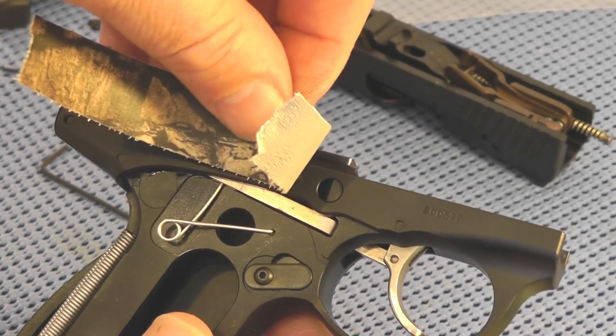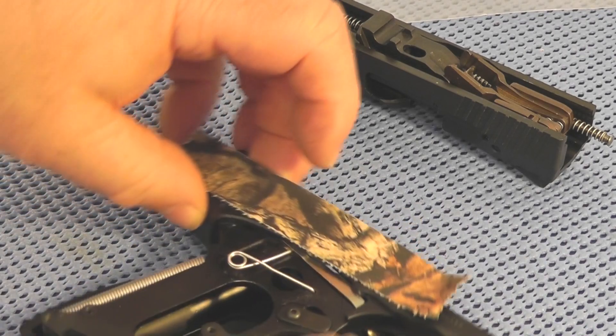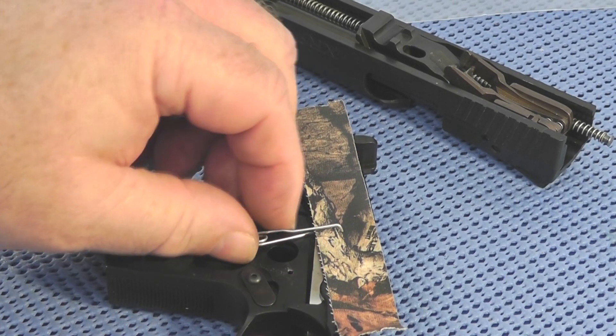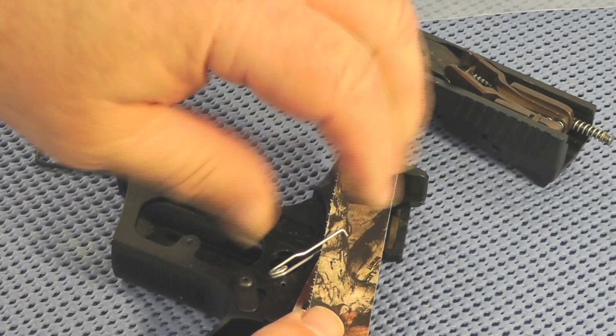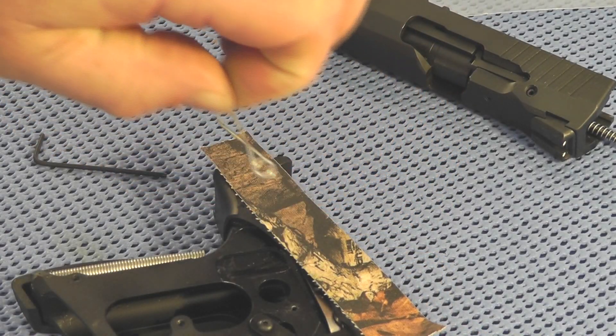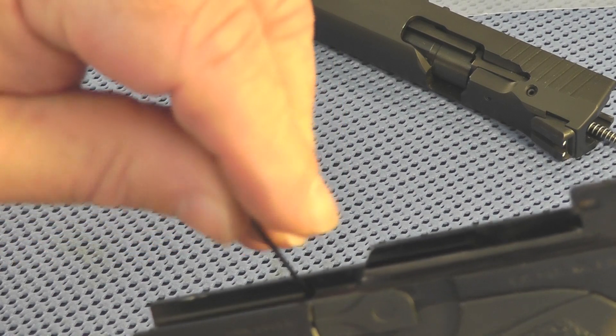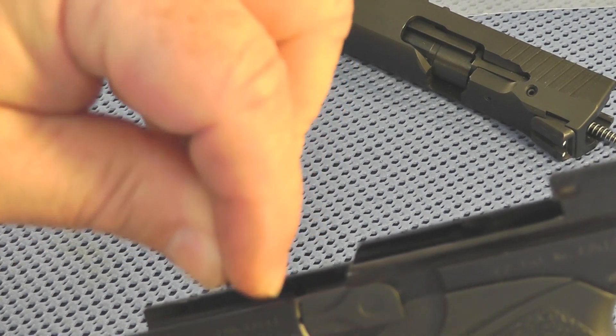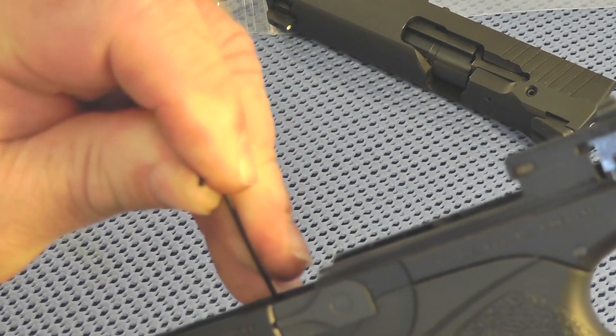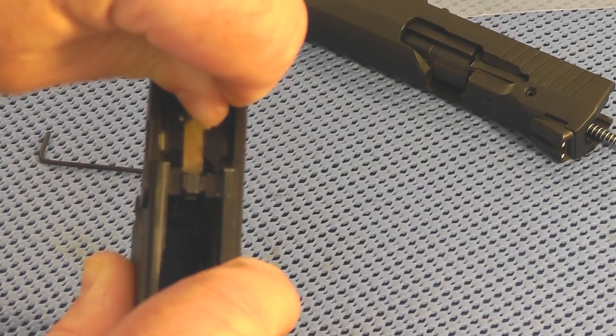Next, you need to remove the little set screw that holds the trigger pin pivot pin in. It's a little tough. I thought they had put maybe some Loctite on it, but I didn't see any. I was really afraid I was going to break that little Allen wrench, but I finally got it loose.